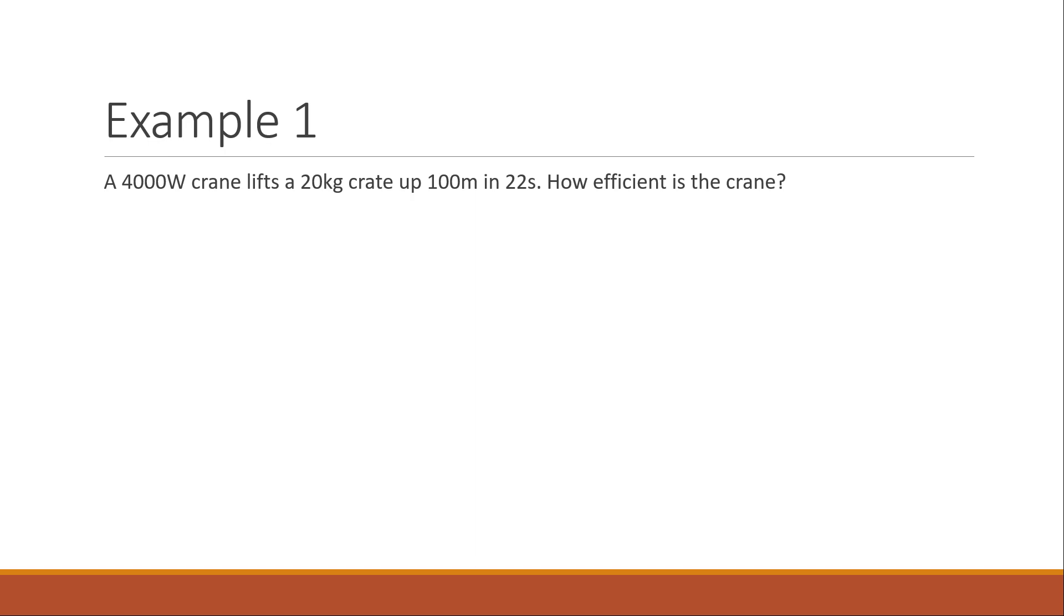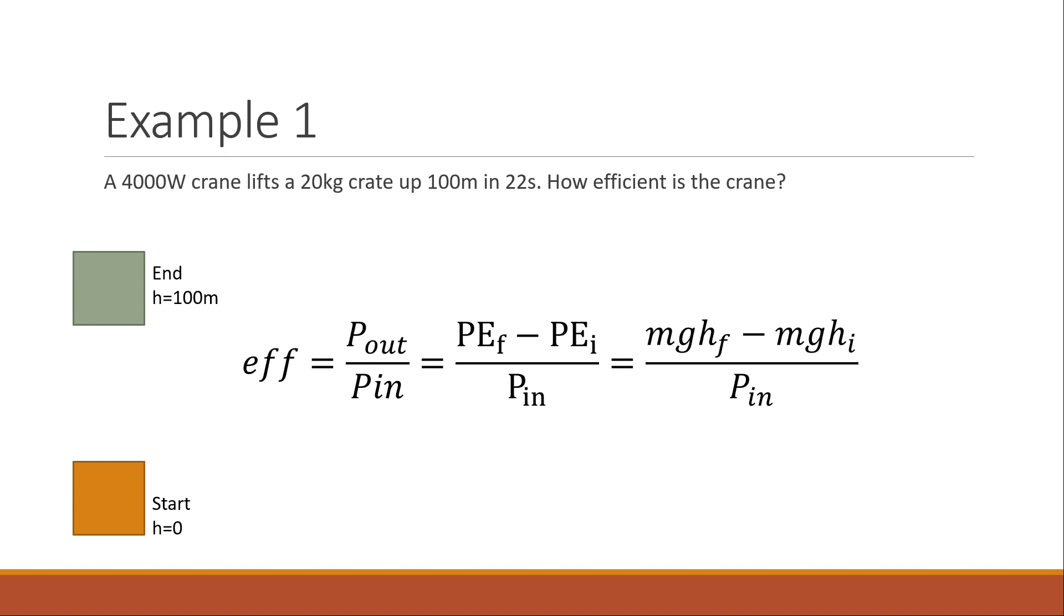So let's do a few examples. Here's the first example. We have a 4000 watt crane that's lifting a 20 kilogram crate up 100 meters in 22 seconds. How efficient is the crane? That's up, that's height zero. So I'm seeing it's changing its height. And changing its height is changing potential energy. So that's in my mind. And when I'm reading the question, I see a 4000 watt crane. Watts are power. So I'm going to use the power version of my efficiency formula. So I have my P_out over P_in.